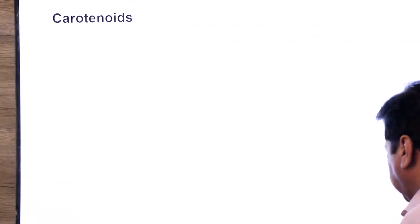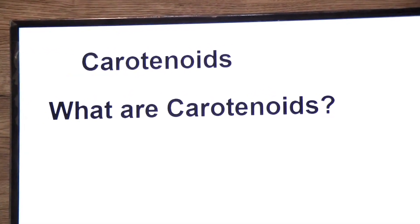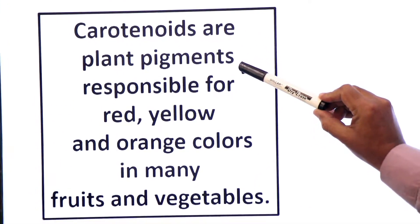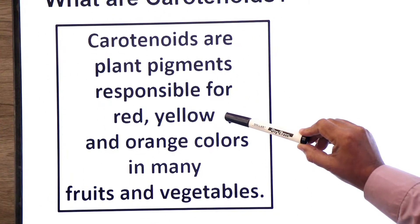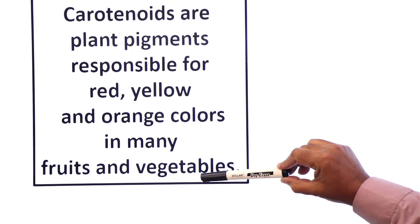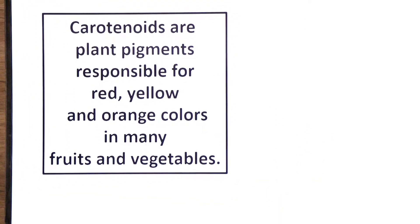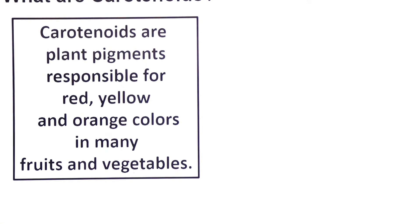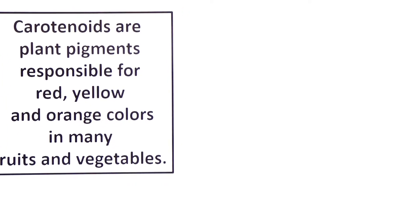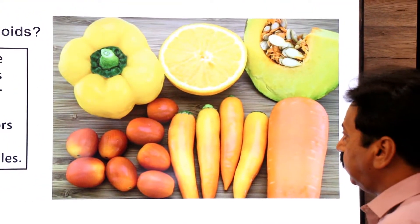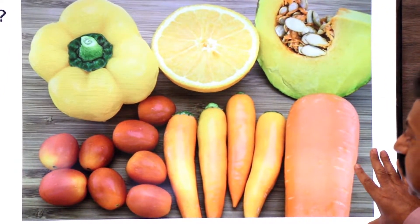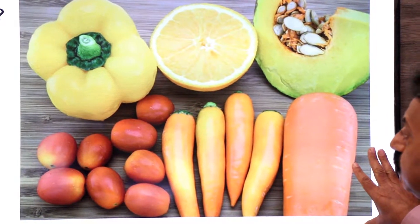First, the definition: what are carotenoids? Carotenoids are plant pigments responsible for red, yellow, and orange colors in many fruits and vegetables. Looking at this picture of different fruits and vegetables, these different colors are due to carotenoids.